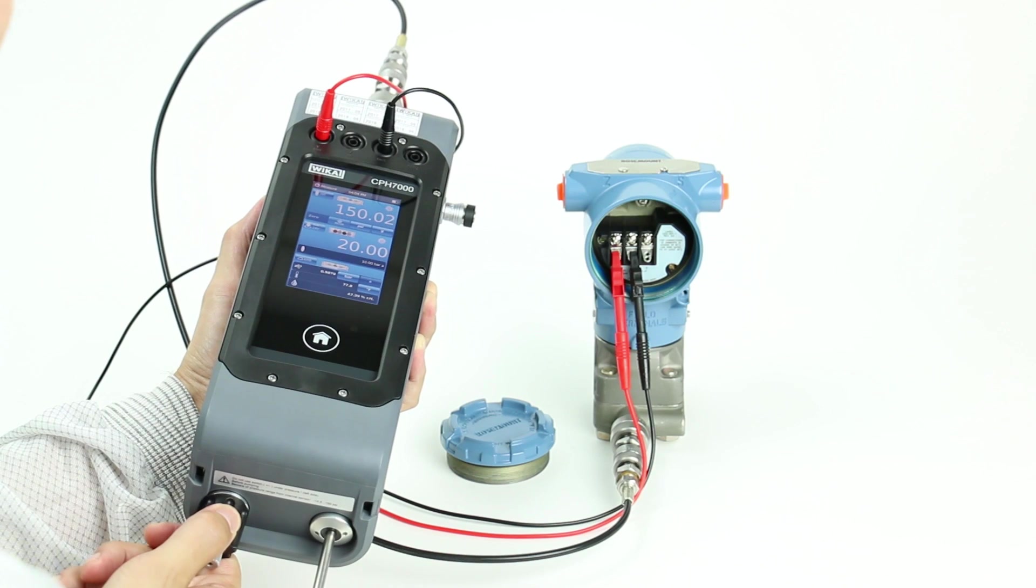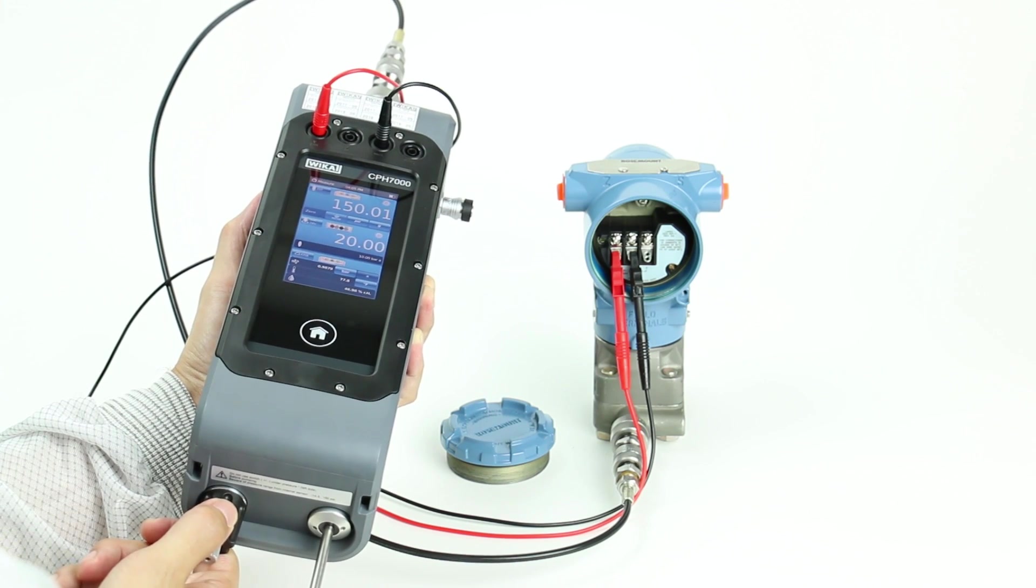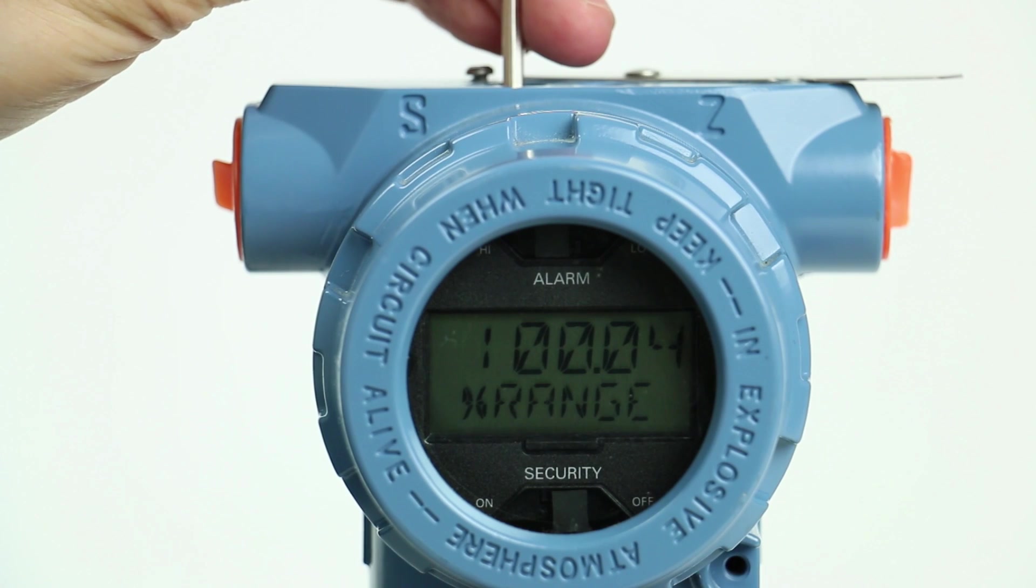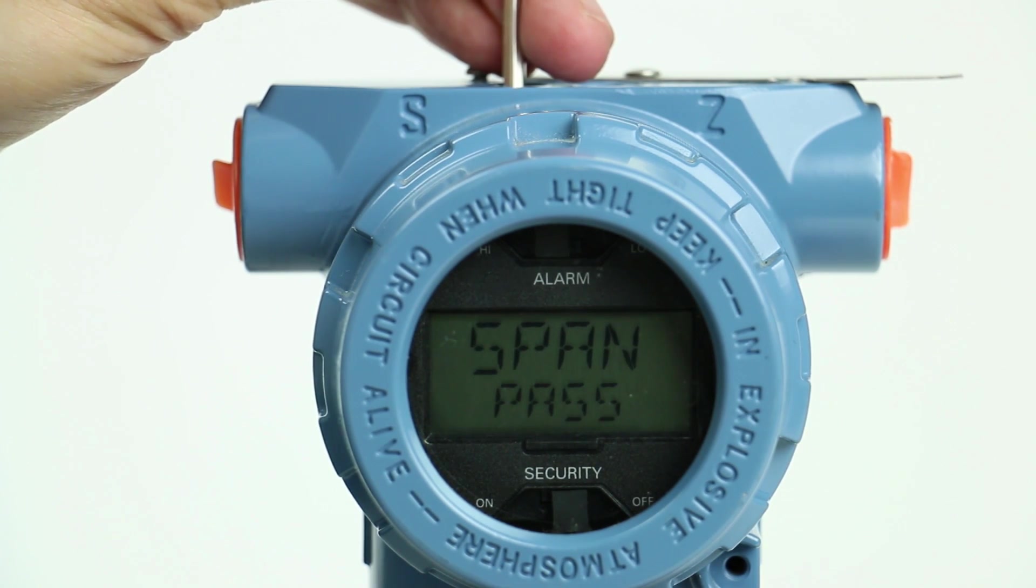To set the span at 20 milliamps, pressurize the unit to 150 psi and press the span button. This sets the output to 20 milliamps at 150 psi.